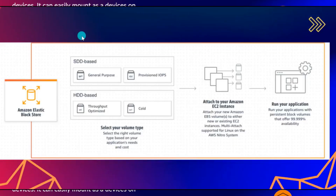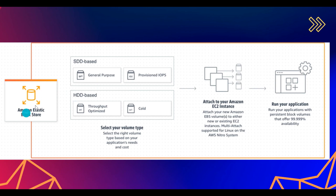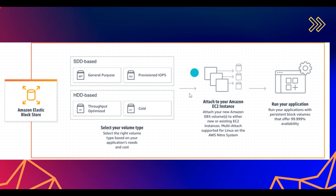Let me show you a diagram to explain EBS. This is your Elastic Block Storage — when you select it, it gives you the facility to choose the volume type: General Purpose or Provisioned IOPS SSD-based, or Throughput Optimized and Cold HDD-based. Based on your requirement you select the correct EBS volume, attach it to your EC2 instance, and you are good to run your application.